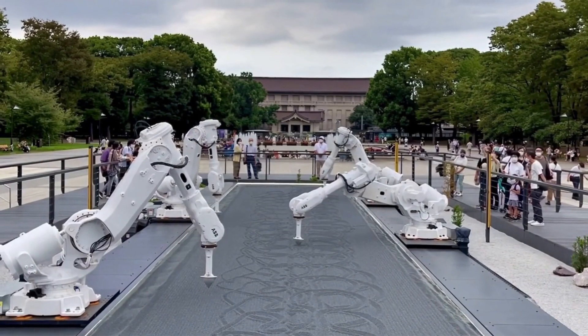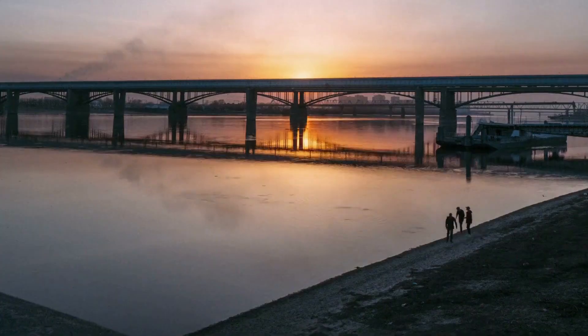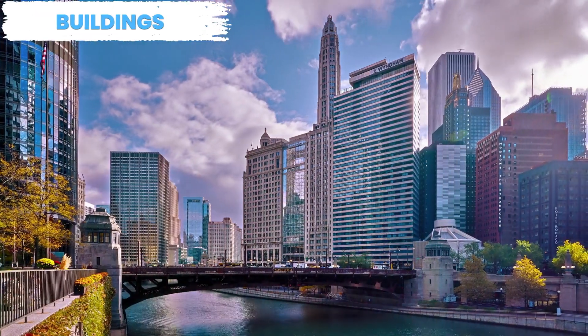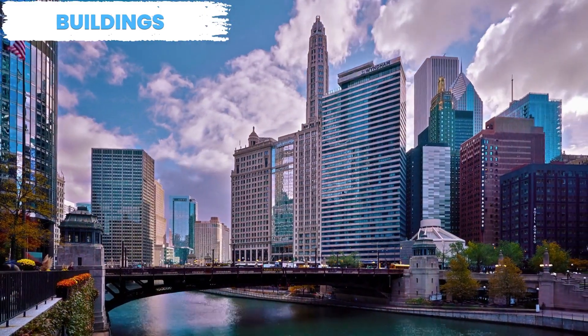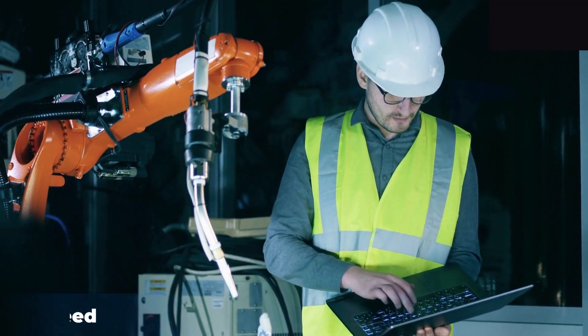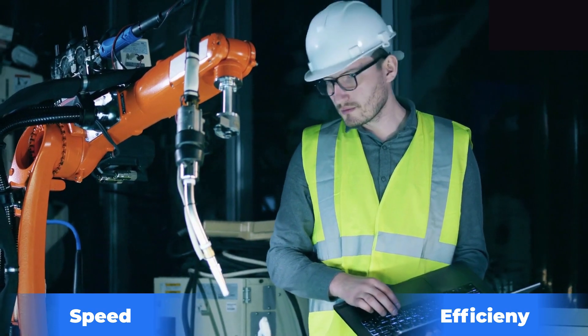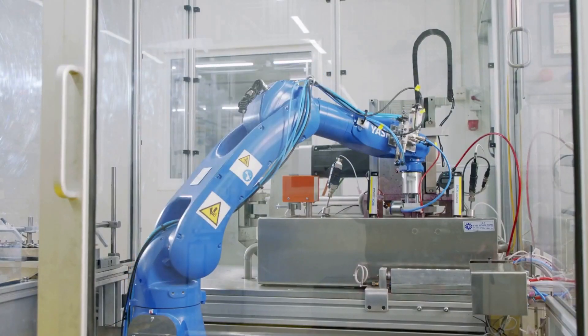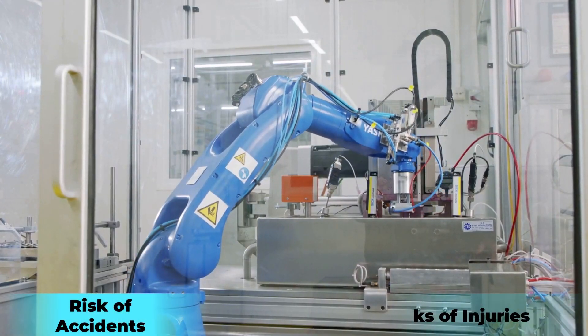Swarm robotics also has the potential to revolutionize the construction industry. In this scenario, a group of robots could work together to build structures, such as bridges or buildings, by coordinating their movement and actions. This would not only increase the speed and efficiency of construction projects, but also improve worker safety by reducing the risk of accidents and injuries.